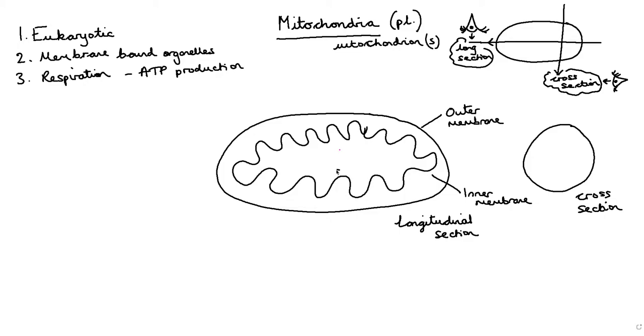One of these folds is referred to as a crista. And for those of you doing higher-level biology, the crista is the site of the electron transport chain in respiration.